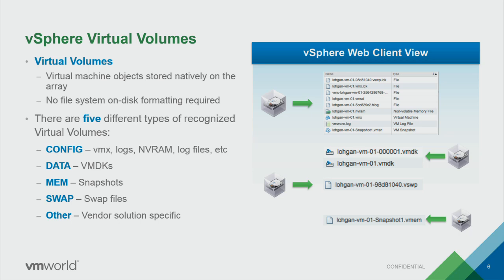These independent, discrete entities called Virtual Volumes represent all the different aspects of a VM, but how they are actually stored is in what we call a storage container. We have an array with a full set of capacity to store our Virtual Volumes. What we no longer need to do is carve this up into LUNs to hold all these different objects. We can do away with LUNs completely in a VVol-based implementation.